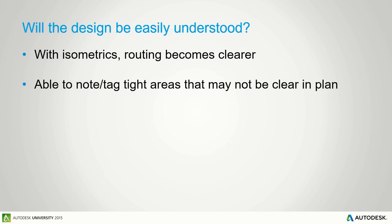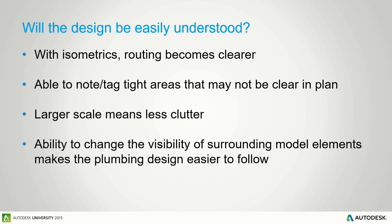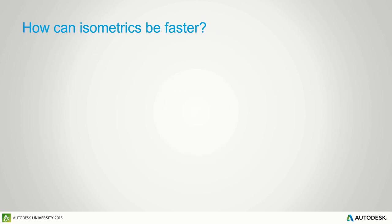You're able to tag and note tight areas that may not be clear in plan because you have everything else in the way. Where plans don't have space for all those notes and dimensions, using an ISO you're able to create space for yourself to put those tags in. You're also able to display and tag stacked pipe because it's a 3D view. Having a different, larger scale means less clutter and more space for tagging and noting. Within Revit you also have the ability to change visibility of the surrounding model, making the plumbing design much clearer.